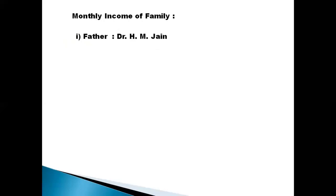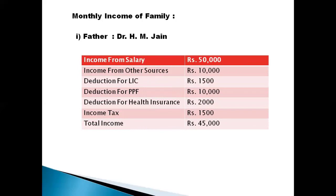Suppose we are dealing with the Jane family. The father is the head of the family — suppose he is a doctor. In the income table: income from salary is Rs. 50,000; income from other sources, meaning apart from his job such as a small business or other sources, is Rs. 10,000. Deductions include LIC at Rs. 1,500, PPF at Rs. 10,000, and health insurance at Rs. 2,000. All these deductions are one type of saving — on LIC, PPF, pension fund, or health insurance.